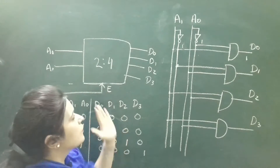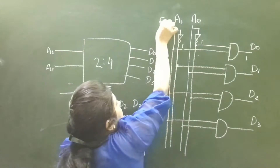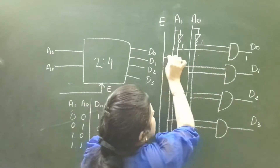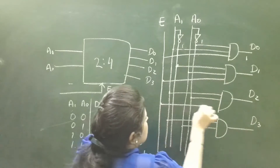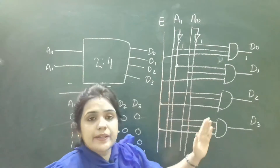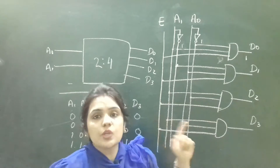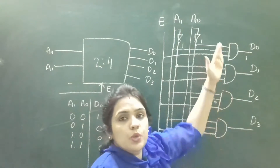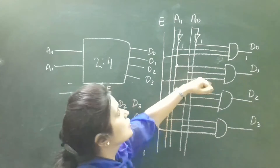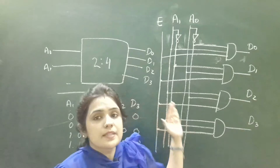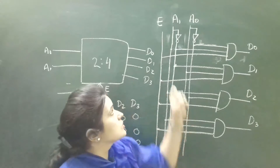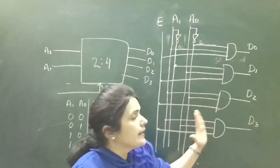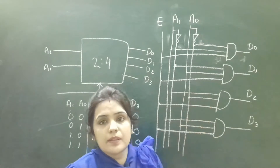Now, how will it enable or disable the decoder? I will simply connect this third input to these AND gates. We know that in AND gates, when any input is 0, the output will be 0. So if E is 0, the output of all the AND gates will be 0 irrespective of the values of A1 and A0. So we can say the decoder is disabled when the value of E is 0.